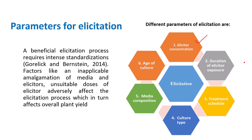The key parameters are: first, elicitor concentration; second, duration of elicitor exposure — how long the exposure lasts and at what intervals; third, treatment schedule — for example, dosing every two days or twice a day; fourth, type of culture — the explant or suspension culture being used; fifth, media composition; sixth, age of culture — how many days the culture has been maintained and whether it has been subcultured. All these parameters affect the process of elicitation.